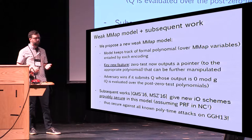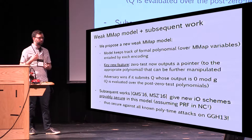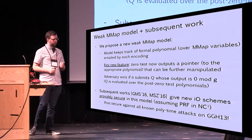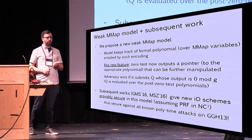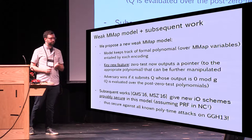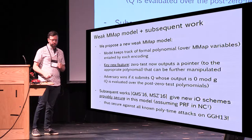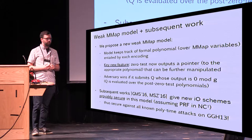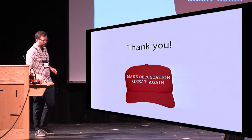In subsequent work, there have been two new IO candidates proven secure in this weak multilinear map model. The first is due to Garg, Mukherjee, and Srinivasan, and the second is due to the same authors of this paper. These are provably secure in this model assuming a pseudorandom function in NC1, with the assumption in ours being slightly more general — but still a standard crypto assumption. These candidates are thus secure against all of the attacks we know of against GGH13. Thank you very much.